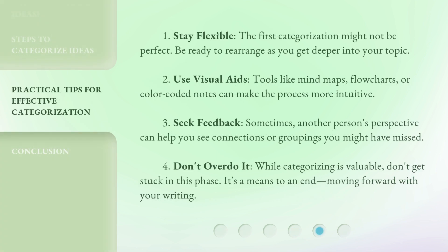1. Stay flexible. The first categorization might not be perfect — be ready to rearrange as you get deeper into your topic. 2. Use visual aids. Tools like mind maps, flow charts, or color-coded notes can make the process more intuitive. 3. Seek feedback. Sometimes another person's perspective can help you see connections or groupings you might have missed. 4. Don't overdo it. While categorizing is valuable, don't get stuck in this phase — it's a means to an end: moving forward with your writing.